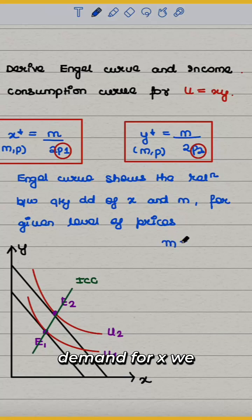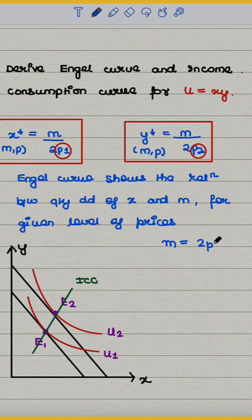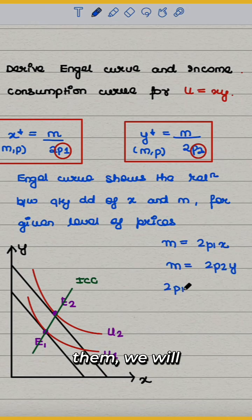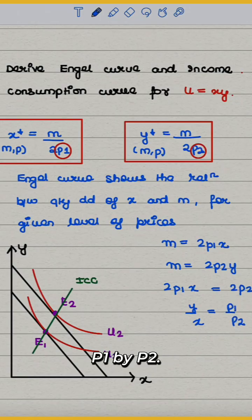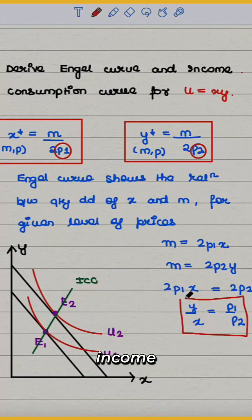From Marshallian demand for x we can write m equals 2p1x. From Marshallian demand for y we can write m equals 2p2y and equate them. We will be getting y by x equals p1 by p2. This is the expression for income consumption curve.